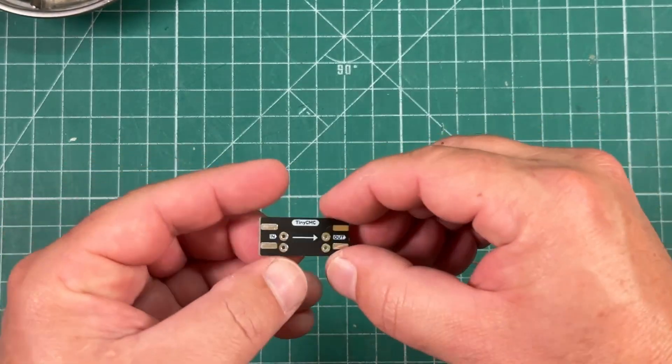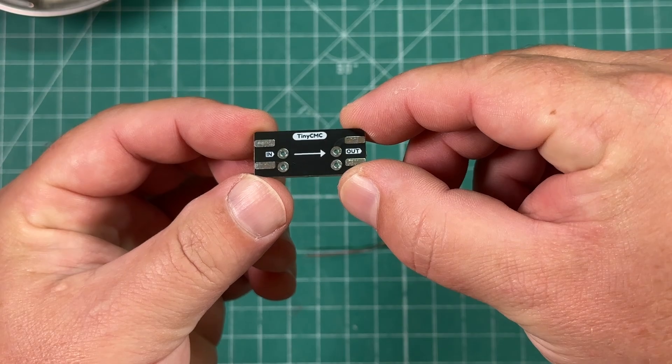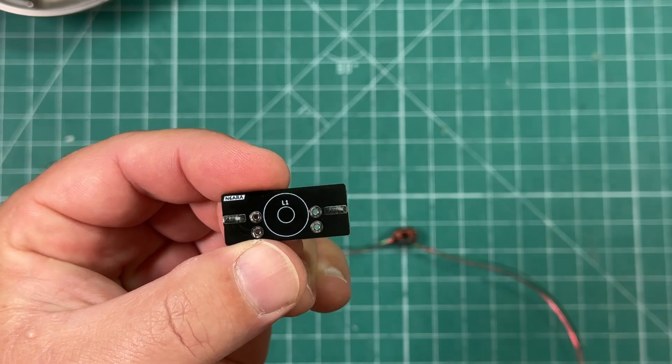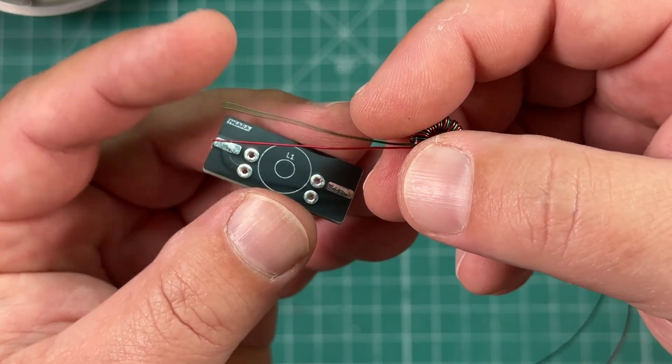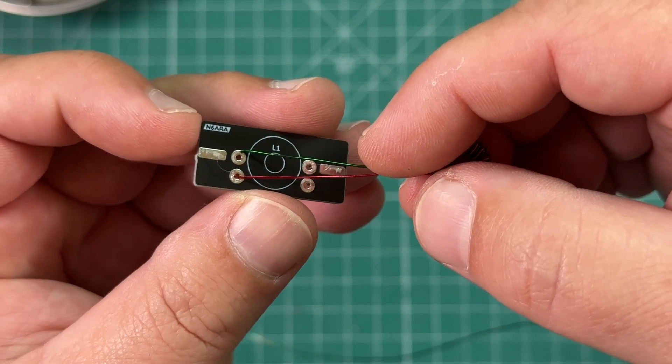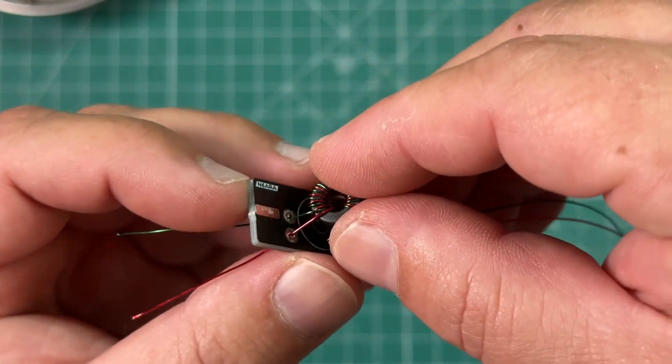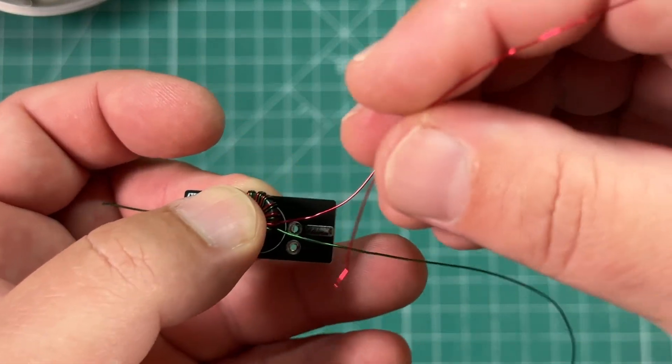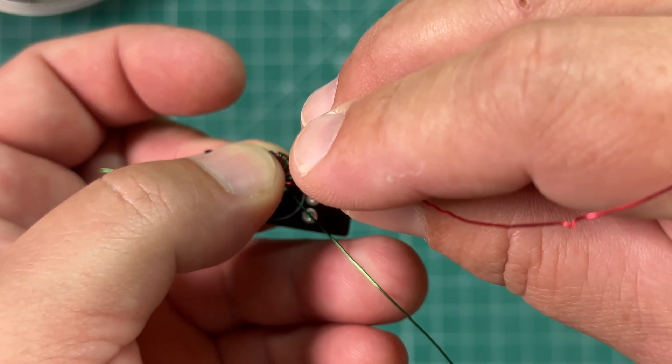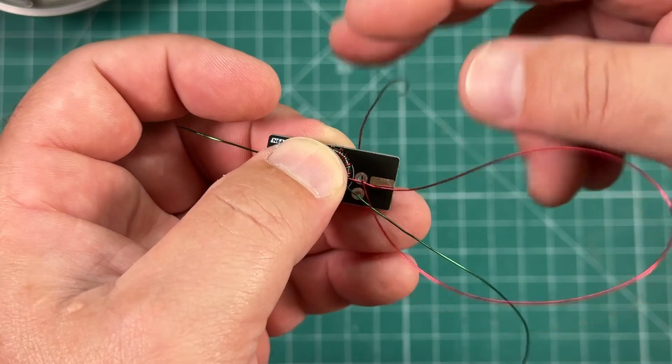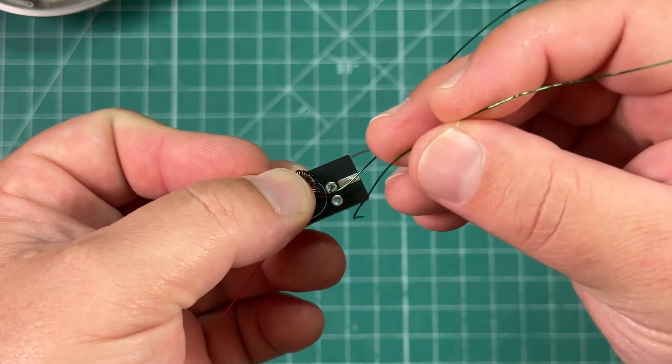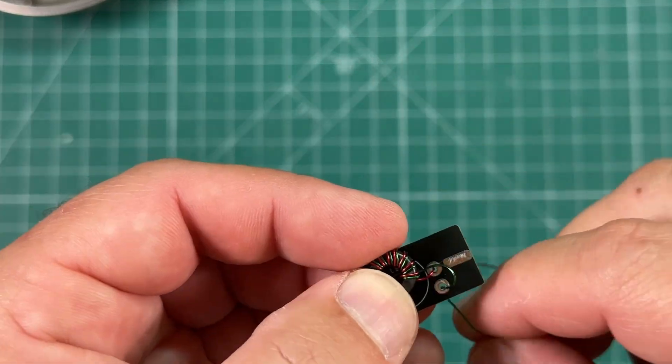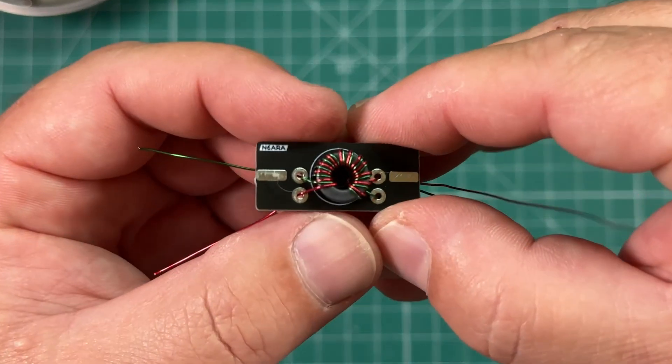Next, we're going to solder our toroid onto the back side of this PCB. This is the front that says in and out, this is the back that says N6ARA. We're going to take the green wire, that's going to go on the top left and the red wire is going to go on the bottom left. On the top right, our red wire is going to go through here. And on the bottom right, the green wire.